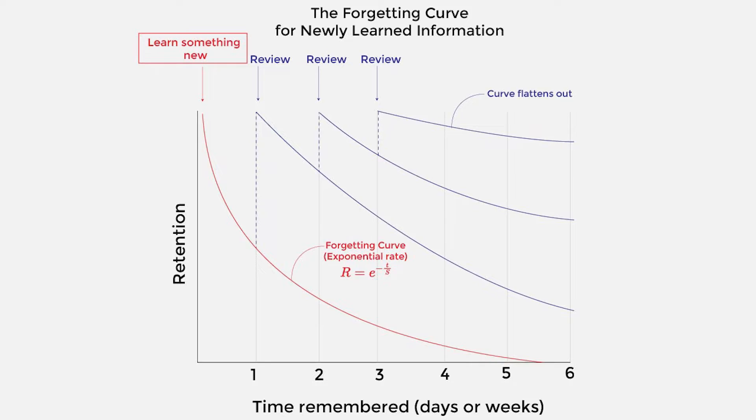Let's briefly talk about why we forget by relating it to something called the forgetting curve. This curve was hypothesized and discovered by a psychologist by the name of Hermann Ebbinghaus. All it says is that when we learn something new, our memory or retention will decline at an exponential rate over time.